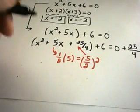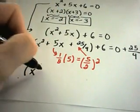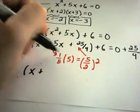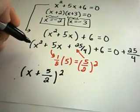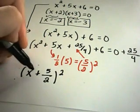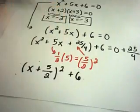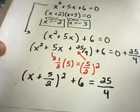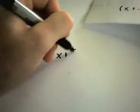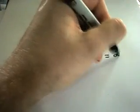On the left side, x squared plus 5x plus 25/4 factors as (x + 5/2) squared. That's how the stuff in the parentheses factors down — whenever you take one half of the number in front of x, in this case 5/2, that's what goes inside the parentheses. So I've got (x + 5/2) squared plus 6 equals 25/4.